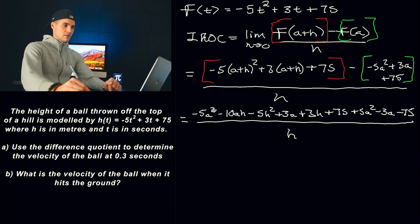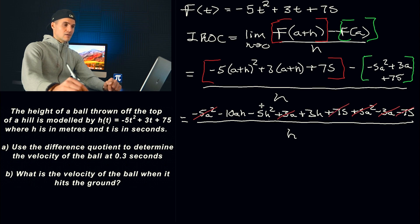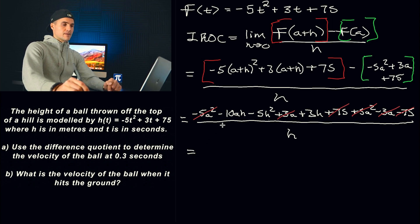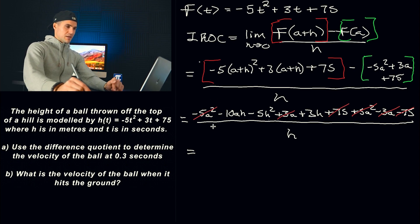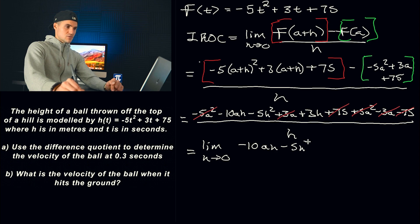A lot of things are going to cancel out: negative 5A squared plus 5A squared goes away, 3A minus 3A, 75 minus 75. What you should be left with in the numerator are only expressions that have an H attached to them, because we're going to factor out that H to cancel with the H in the denominator. So we're left with negative 10AH minus 5H squared plus 3H, all over H.